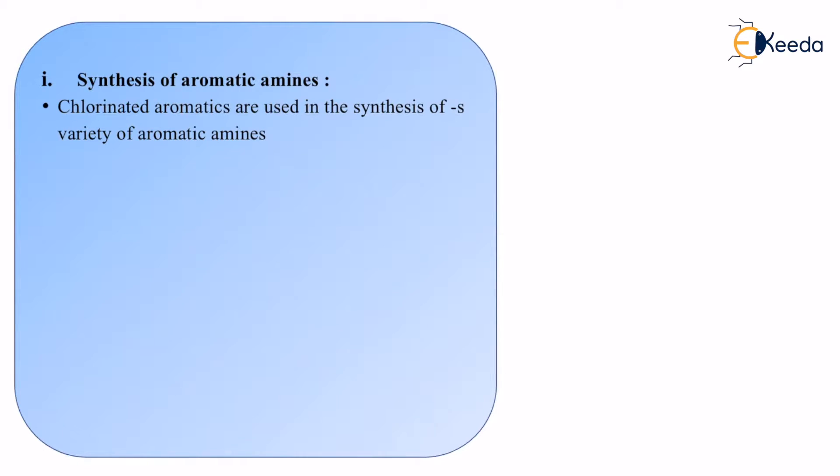Amines are derivatives of ammonia. Ammonia itself is NH3. When we have primary, secondary, tertiary amines, we are simply removing the hydrogens from ammonia and making a compound out of it. These amines are stuck to the aromatic compounds.